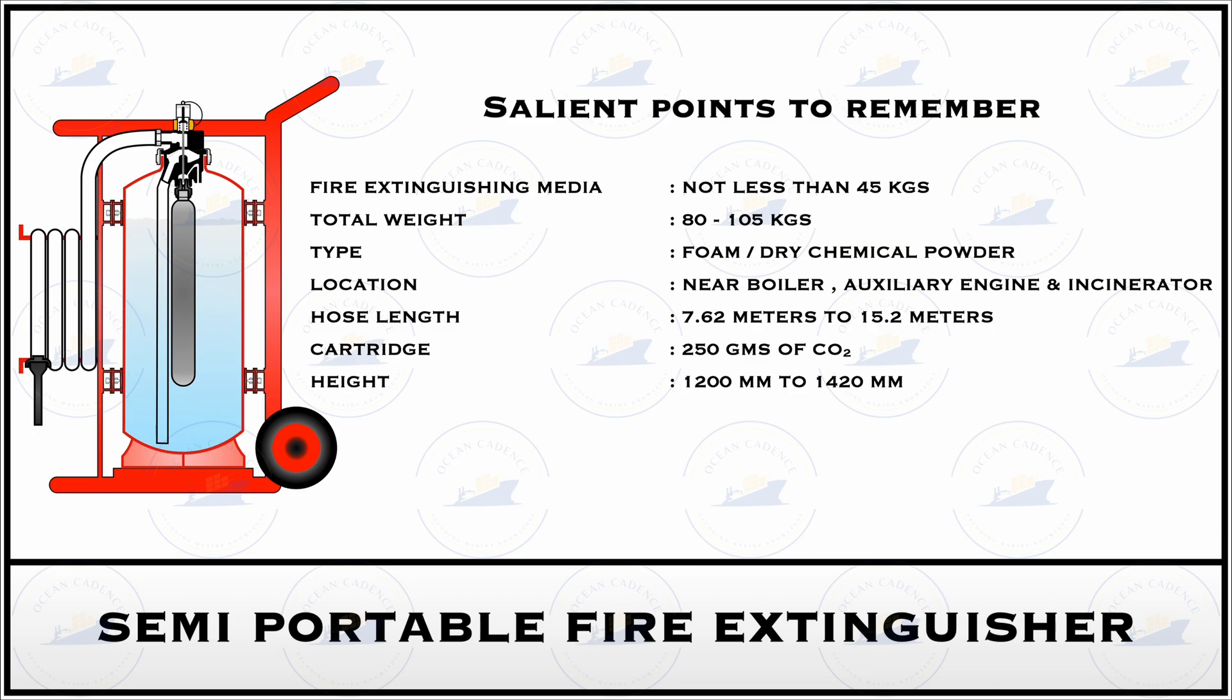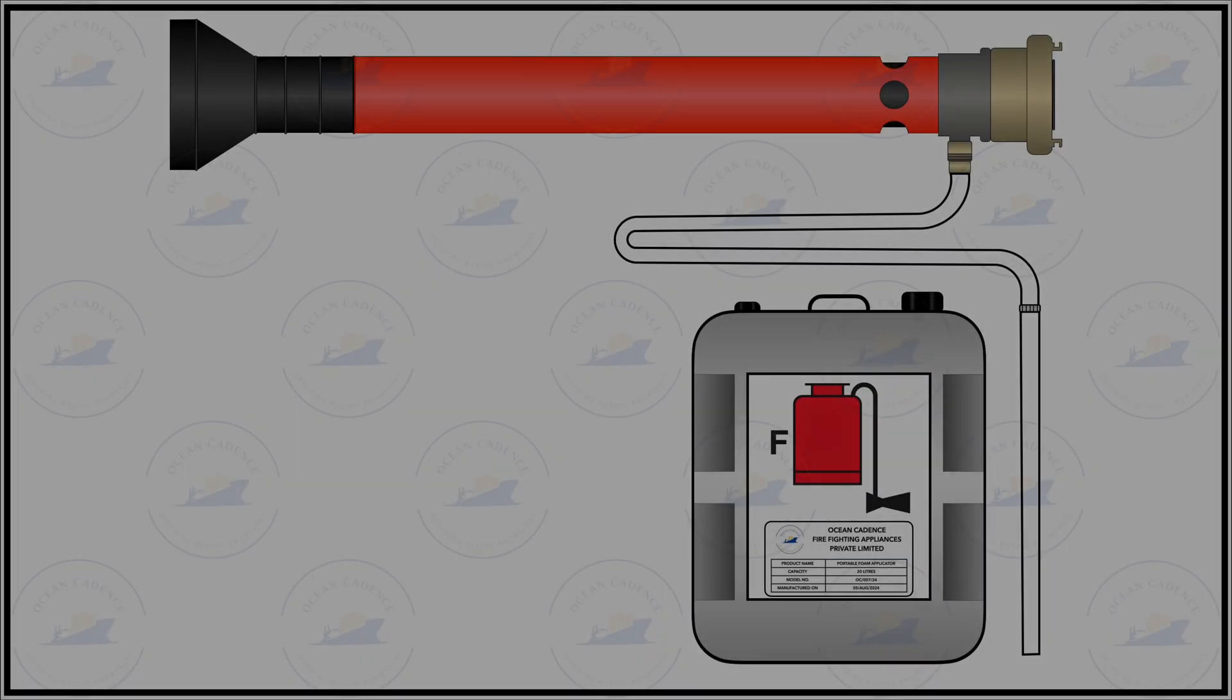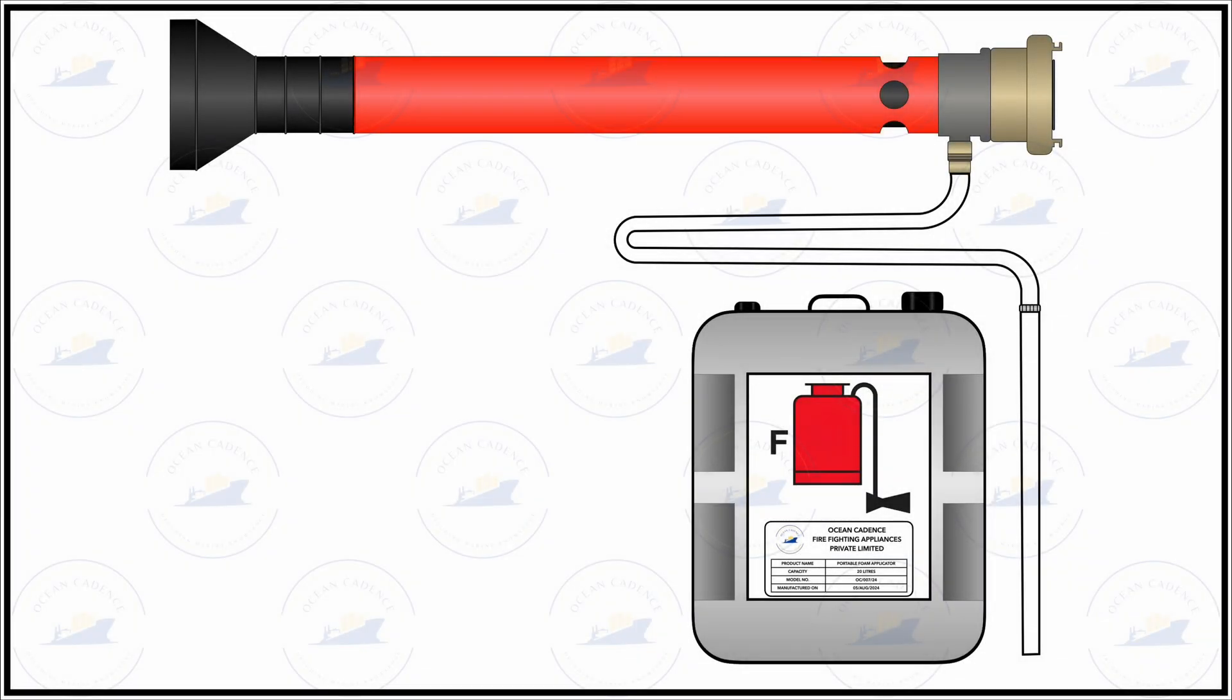Now that this explanation is clear, let us move to our next topic of concern that is the portable foam applicator unit. Again, the portable foam applicator unit is an additional fire safety media that is being placed in the engine room owing up to the nature of the fire and usually you would find it secured near the boiler system, the incinerator system or outside of the engine control room as well in a red box.